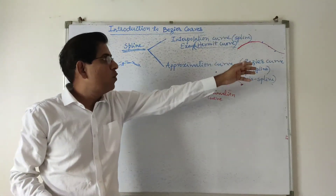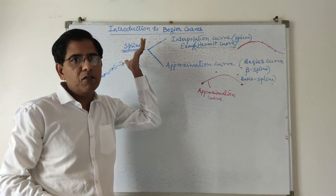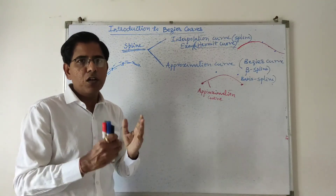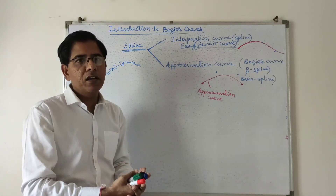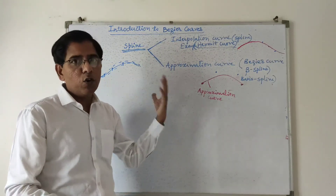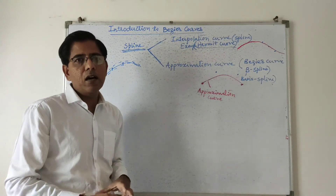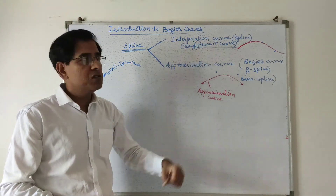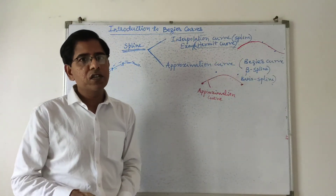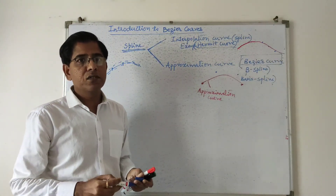So this is how we arrive at the introduction of Bezier curve — Bezier curve is basically an approximation curve in the category of spline, which is a three-dimensional engineering curve. I hope you understand what a curve is, how curves are classified, how they are represented — explicit form, implicit form, parametric form — what a spline is, how splines are categorized into interpolation and approximation curves, and that the Bezier curve and B-spline are examples of approximation curves. We'll see Bezier curve in detail in the coming lectures.